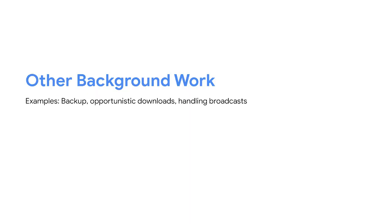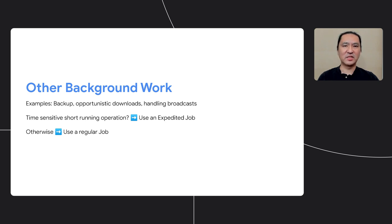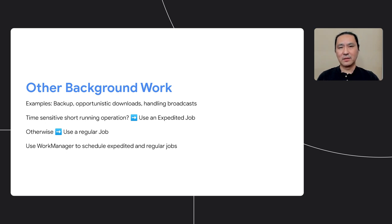For most background work, we recommend using WorkManager. If your work is time-sensitive and will take less than a few minutes, an expedited job may be the right choice. If not, consider using a non-expedited job, which allows the system to schedule it efficiently. WorkManager is the Jetpack library we recommend using as your one-stop solution to all background tasks. With WorkManager, you can schedule expedited jobs, periodic, or opportunistic work.